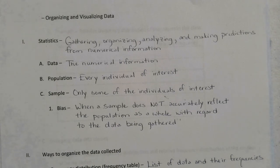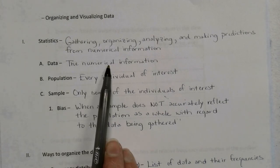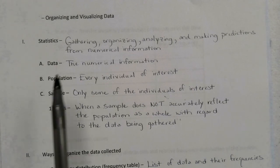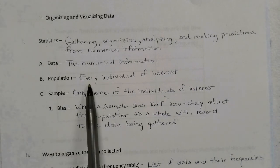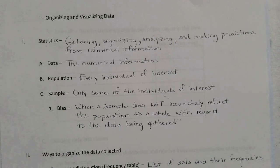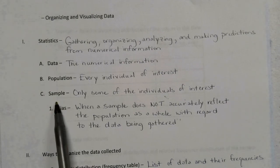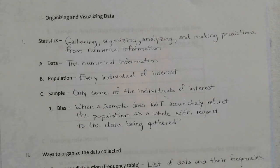So within statistics, we've got some terminology that we need to understand. One being the data — the data is the numerical information that is gathered. The other definition that we need is a population. The population is every individual of interest. So with our COVID-19 situation, every individual of interest would be every single person across the globe, every single person in the entire world. Now, sometimes it's very difficult to poll every single person, so sometimes we can only take a sampling of our population. And that is what we call a sample — the sample is only some of the individuals of interest.